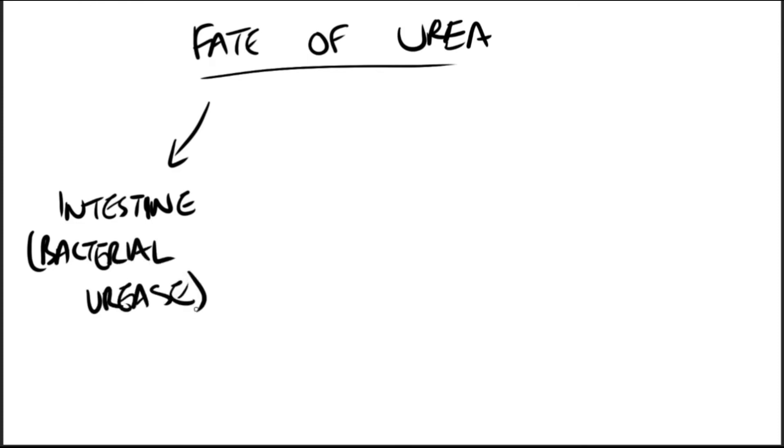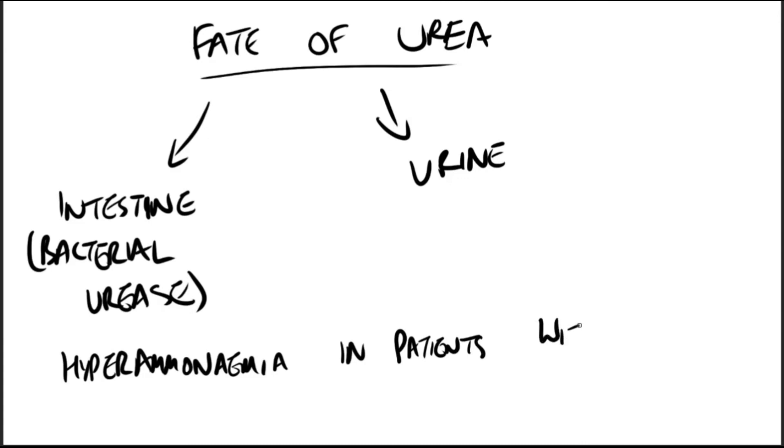Urea diffuses from the liver and is transported in the blood to the kidneys where it is filtered and excreted in the urine. In patients with kidney failure, the plasma urea levels are elevated, promoting a greater transfer of urea from the blood into the gut. The intestinal action of urease on this urea becomes a clinically important source of ammonia, contributing to the hyperammonemia often seen in these patients.